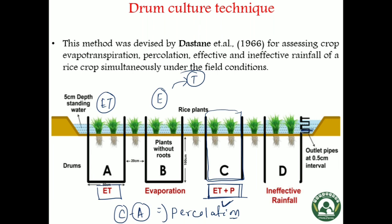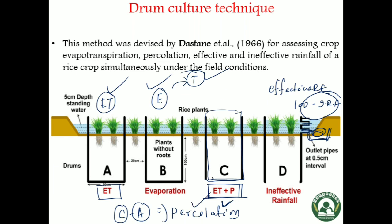If ineffective rainfall is known, then effective rainfall equals 100 minus ineffective rainfall. In this way, we can determine evapotranspiration, evaporation, transpiration, percolation loss, daily water requirement of the crop, and effective and ineffective rainfall. The drum culture technique allows us to determine all these parameters through a single technique under field conditions. The demerit is that filling the drums with soil representative of the surrounding area is a very difficult task. Otherwise, this is a very good technique.